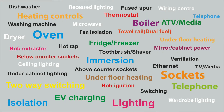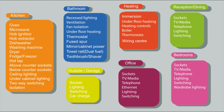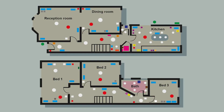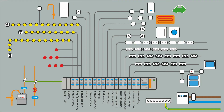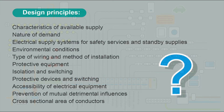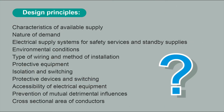We need to have an idea of what we want to install: sockets, lights, switching, appliances. Then we firm this up into a plan, going through it room by room, deciding what and where we want to install things — how many sockets, how many lights, how we're going to switch it. Then we can divide up into circuits and start designing the actual electrical installation.